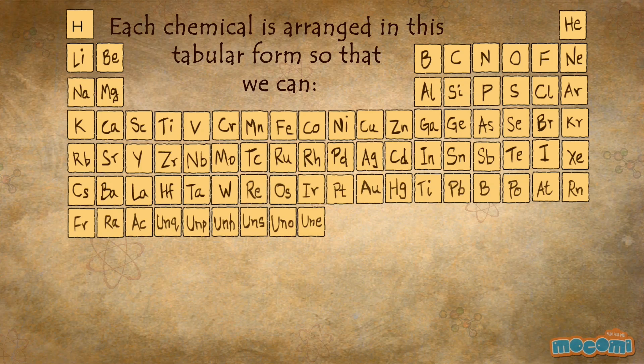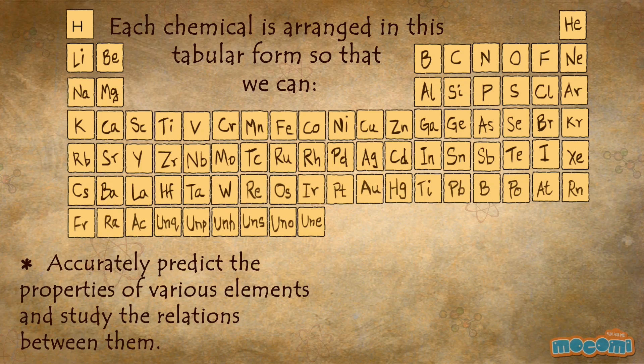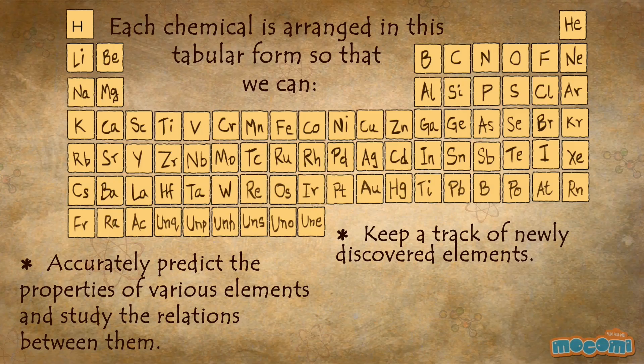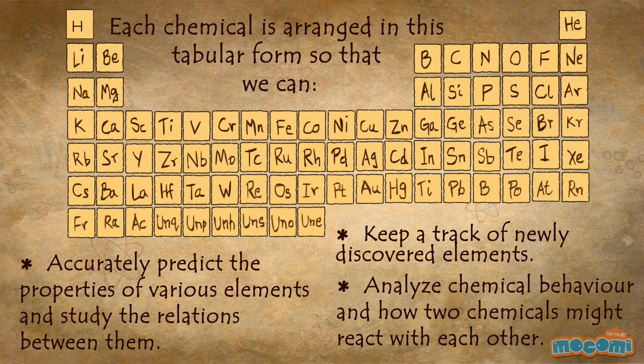Each chemical is arranged in this tabular form so that we can accurately predict the properties of various elements and study the relations between them, keep a track of newly discovered elements and analyze chemical behavior.